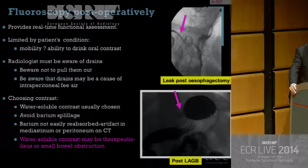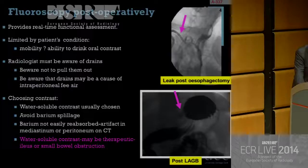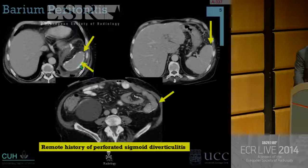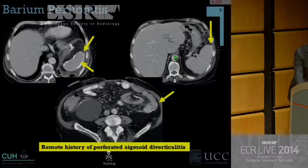When choosing contrast, we usually use water-soluble contrast and preferably non-ionic contrast. Gastrographin can induce significant chemical pneumonitis. We don't use barium much because we don't want barium spillage — barium isn't easily reabsorbed and can cause artifact in the mediastinum or peritoneum on CT for many years. Water-soluble contrast has an advantage in that it can be therapeutic for ileus. This case from Cork University Hospital showed increased density surrounding the spleen, liver, and small bowel — which turned out to be barium peritonitis from a remote perforated sigmoid diverticulitis.